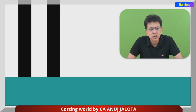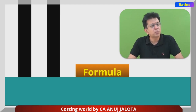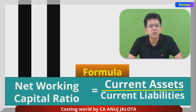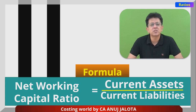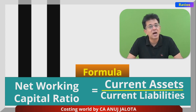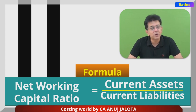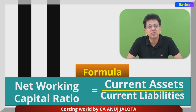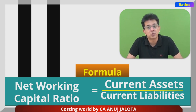Net Working Capital Ratio is popularly also called the Current Ratio. It is simply current assets divided by current liabilities. If this ratio is two, it means that for every one rupee of current liability, you have two rupees available — so you are in a sound financial position.